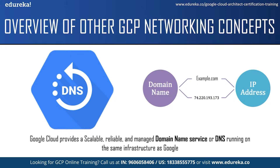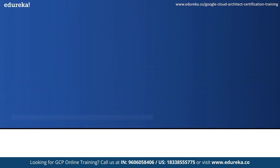DNS directories are stored and distributed around the world on domain name servers that are updated regularly. Cloud DNS is a high-performance, resilient, global DNS service that publishes your domain names to the global DNS in a cost-effective way. It lets you publish your zones and records in DNS without the burden of managing your own DNS servers and software. Cloud DNS offers both public zones and private managed DNS zones — a public zone is visible to the public internet, while a private zone is visible only from one or more VPC networks that you specify.